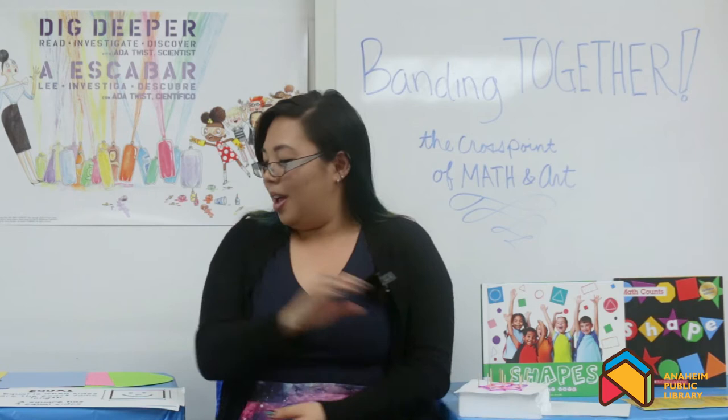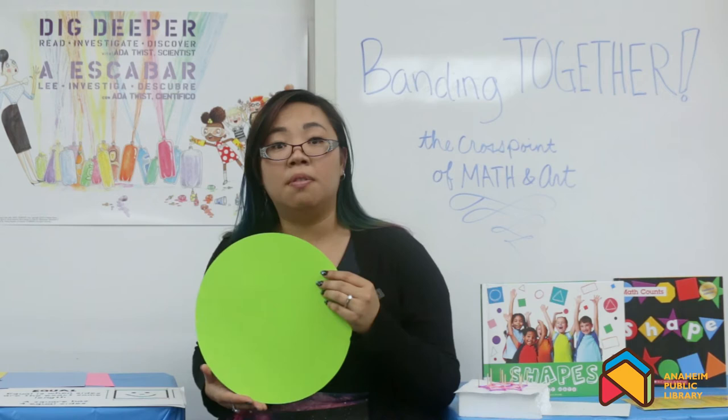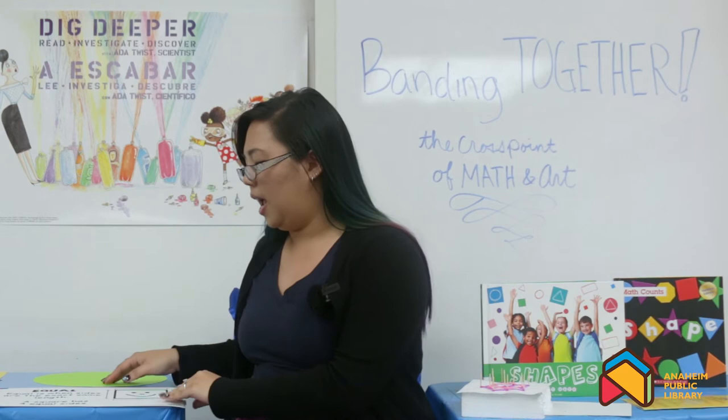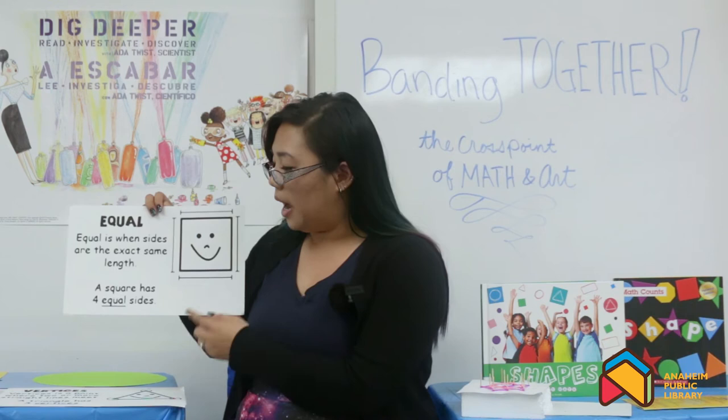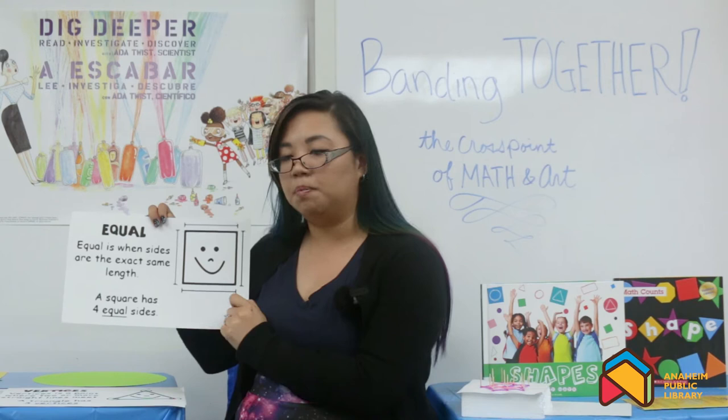Before we get started, what is geometry? It is the part of mathematics where you study the shape and position and dimension of things. Maybe we should learn a few words before we study some of our shapes today. Our first word is equal. Equal is when sides are the exact same length. A square has four equal sides, and we can count them together — one, two, three, and four. So keep that in mind when we're looking at a shape: does it have equal sides?